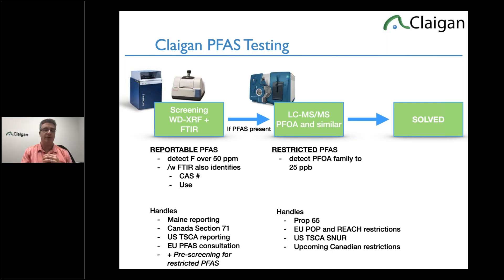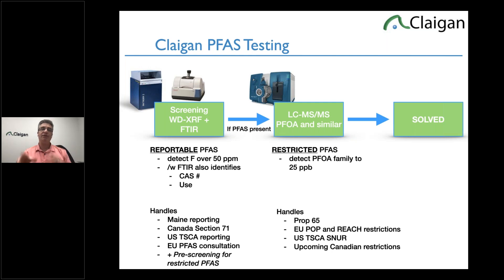We're a test laboratory operating at very high volume, which gives huge advantages in time and cost. If PFAS is present and we're worried about PFOA and similar — which are restricted in Europe and to a lesser extent under Prop 65 and soon Canada — we have to use a liquid chromatograph tandem mass spec (LC-MS/MS). That's for the 25 parts per billion level. But we only have to use that in materials that have high concentrations of fluorine.